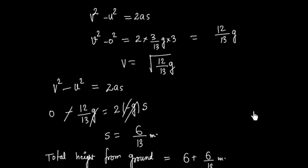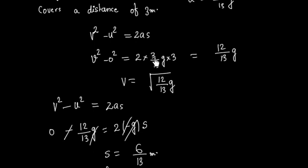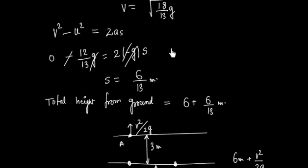I made a calculation mistake earlier. The value should be 3 × 3 × 2 = 18, not 12. So everywhere, replace 12 with 18. This gives v² = 18g/13, and v²/2g = 9/13. So the correct additional height after slack is 9/13 meters, and the final answer for total height from ground is 6 + 9/13 meters.